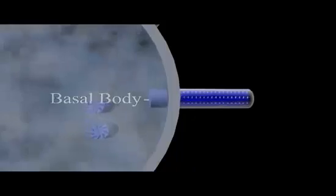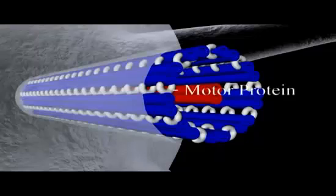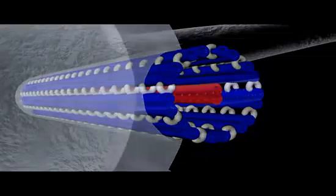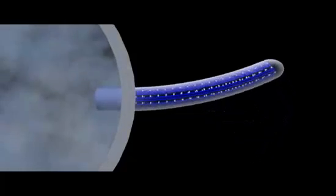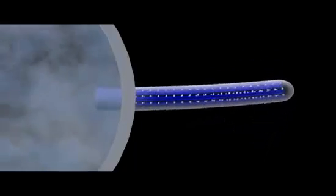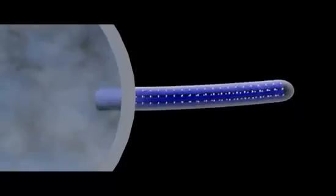Ten pairs of microtubules grow out of each basal body. One pair grows from the center of the basal body while the other nine pairs form the outer infrastructure of a cilia or flagellum. A gap, the width of a microtubule, exists between each of the outer microtubule pairs. Numerous motor proteins firmly attached to one pair of microtubules have legs that cross the gap and can walk on the adjacent microtubule pair. The force applied by the motor proteins causes the microtubules to bend, and the synchronized movement of large columns of motor proteins creates the rowing motion of cilia.